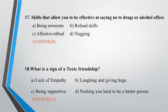Question 17: Skills that allow you to be effective at saying no to drugs or alcohol offers — A. Being awesome, B. Refusal skills, C. Effective real skills, D. Nagging. Answer: B.